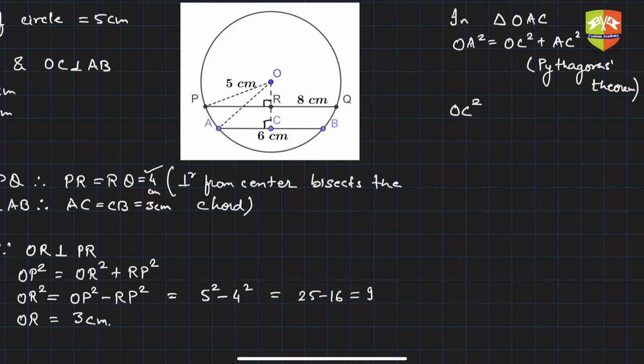So what is OC²? OA² minus AC². OA² is the radius squared, so 5², and AC is 3². So it is 16 minus 9, which equals...